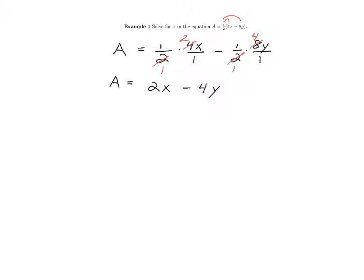So getting x by itself means we have to isolate the 2x. So I'll add 4y to both sides and that gives me a plus 4y is equal to 2x. So as my last step, I'm going to divide both sides by 2. On the right side, those cancel, and I have my answer, x, which is equal to a plus 4y all over 2.